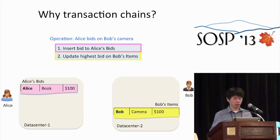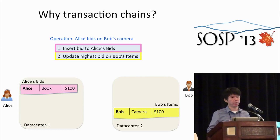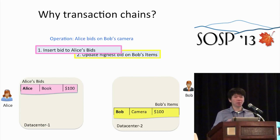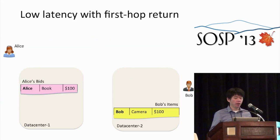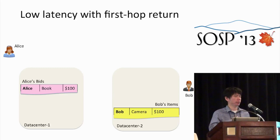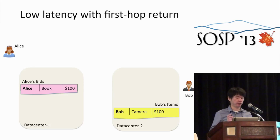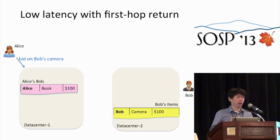We want to avoid that high latency. It would be nice if we can chop up the transaction into two parts: the first part updating Alice's data, and the second part updating Bob's data. This chopped-up transaction represents a chain where each hop updates data in one data center, and the hops are executed serially one after another. This chain primitive gives us the benefit of allowing applications to return after the first hop instead of waiting for the whole chain to finish.